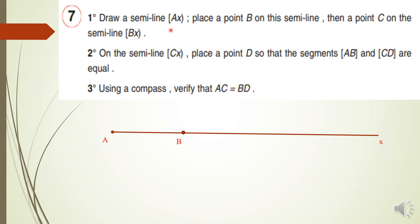Now, place a point C on the semi-line BX. Where is the semi-line BX? I will put a point C here, for example. On the semi-line CX from C to X, place a point D so that the segments AB and CD are equal.